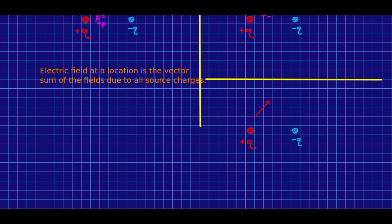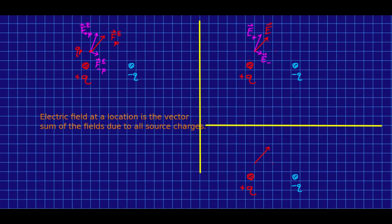We could similarly at this point reason that there will be a field due to the positive charge, which points like so, and a field due to the negative charge, which points like so. And so the total field would be the vector sum of those, which would be something like this.